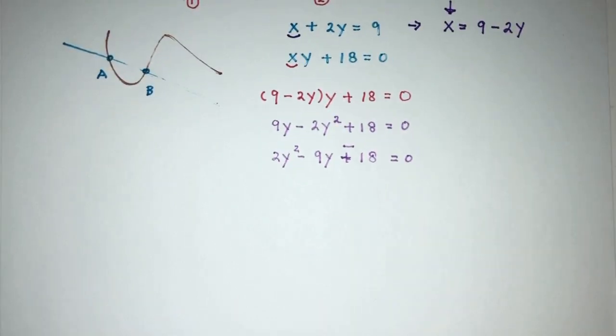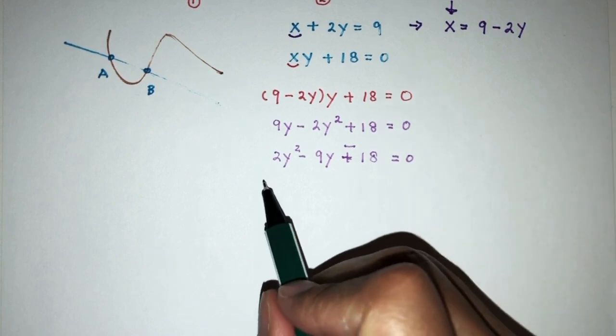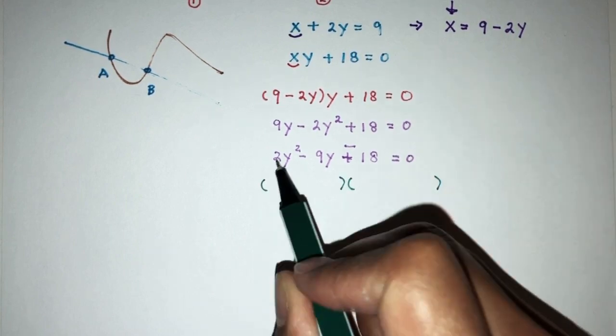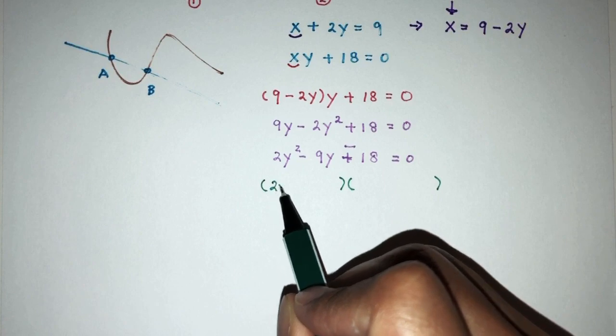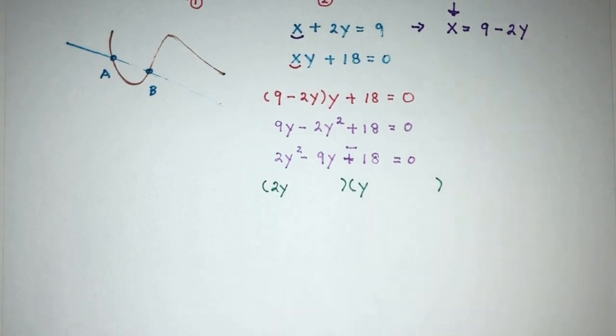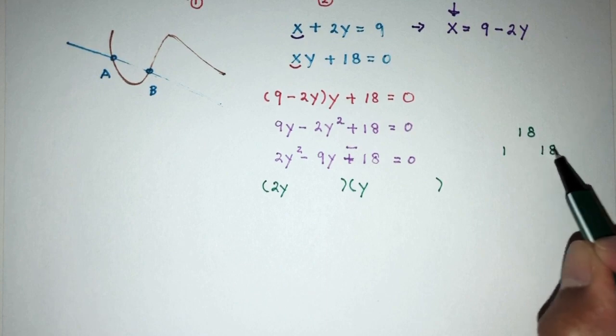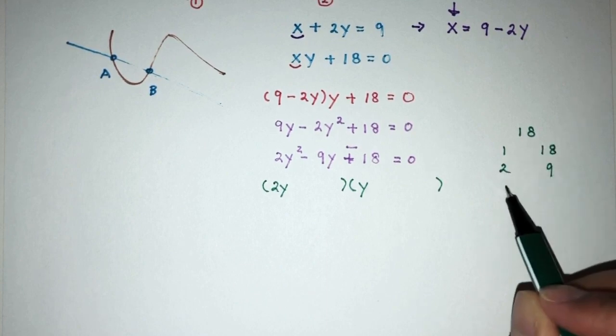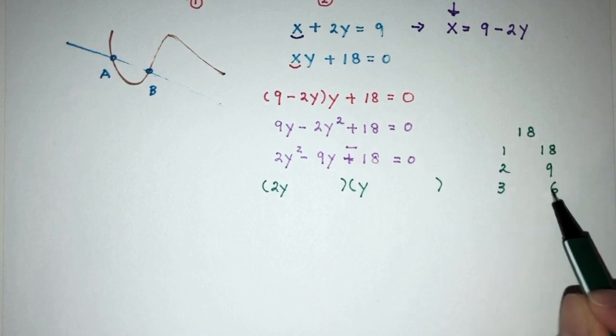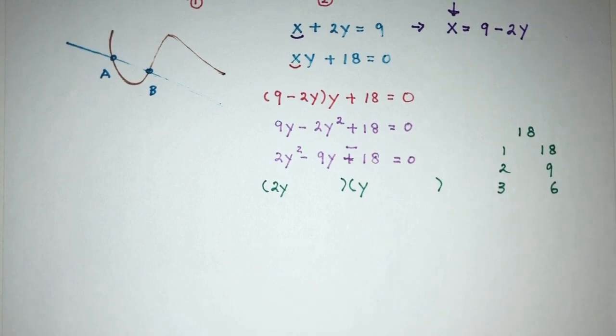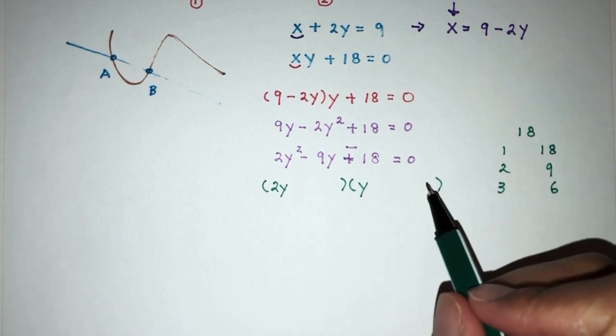Now, as you can see this one will be a simple quadratic equation. So, let's try to solve this. So, factorize. So, here we have 2y square that will be 2y times y and what is 18? Let's say 18 we know it is 1 times 18, 2 times 9, or 3 times 6. So, we have these few options we can choose from but the goal here is to get minus 9.